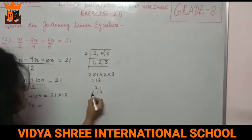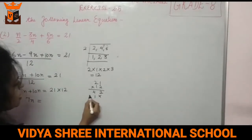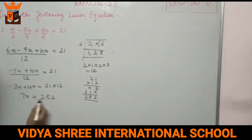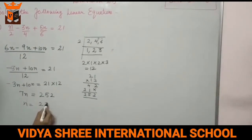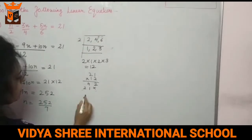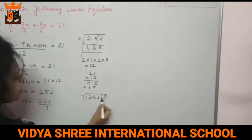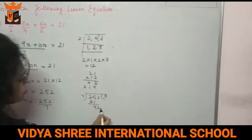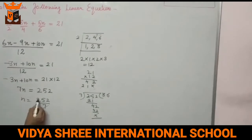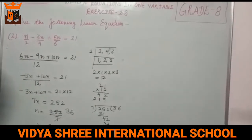We multiply 21 by 12 to get 252. So 7N equals 252. To find N, divide 252 by 7: 7 times 36 is 252, so N equals 36.